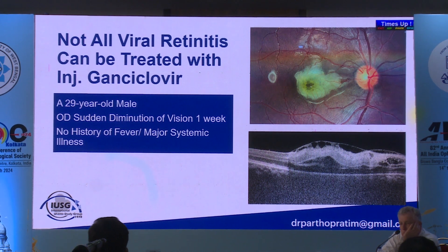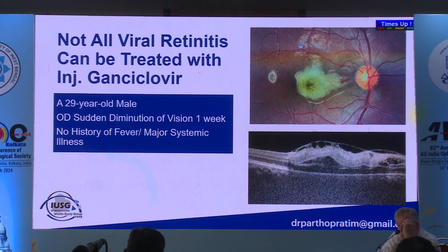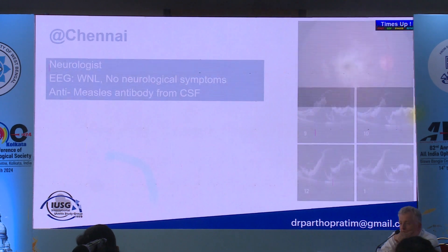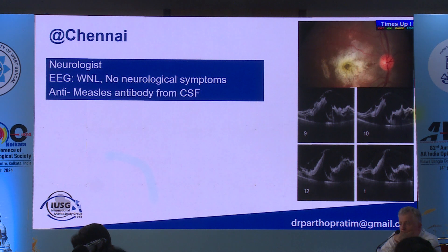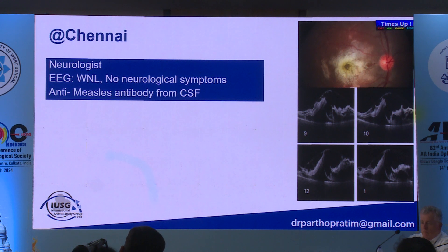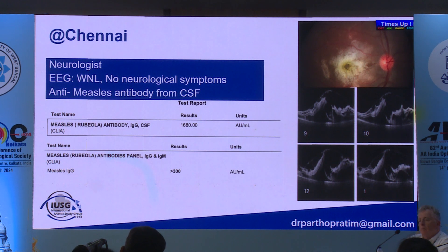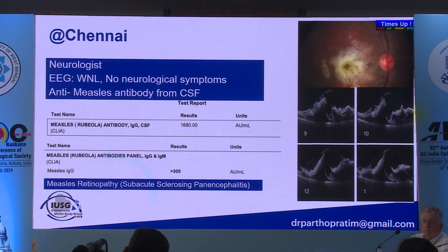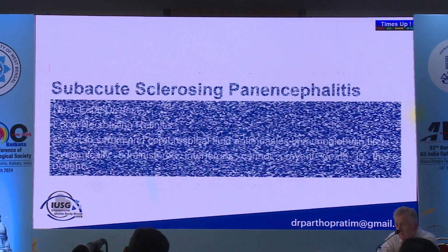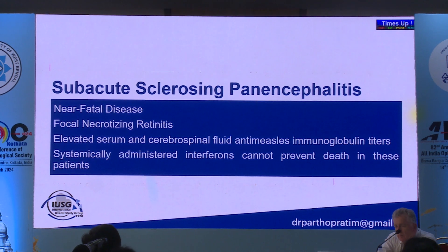Not all viral retinitis cases respond to injectable ganciclovir. A 29-year-old male presented with sudden visual loss and history of fever. After the patient was seen, I asked a neurologist for a CSF tap; the neurologist was initially reluctant as EEG was normal with no CNS findings. Finally, anti-measles antibody was found to be high in both serum and CSF — this was a case of measles retinopathy. It presents with focal necrotizing retinitis, and even treatment with interferon will not prevent death — it is a fatal condition.